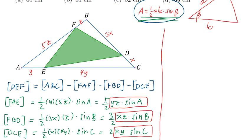We have 120 equals 1 half times this side times this side times the sine of A. We have 5y times 6z times sine A. Solving for YZ sine A, we get 8.